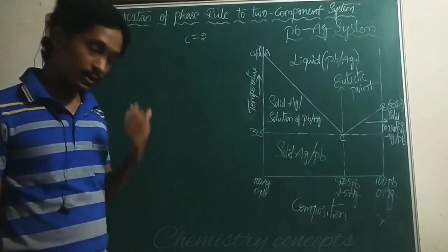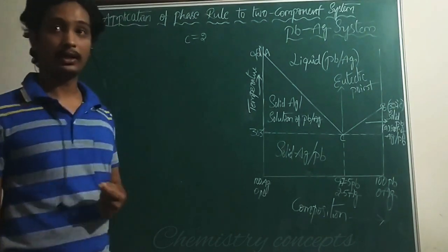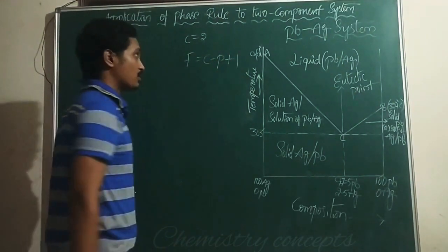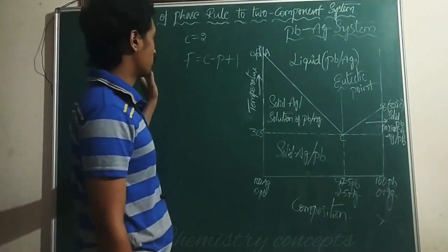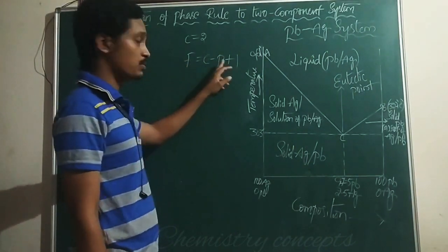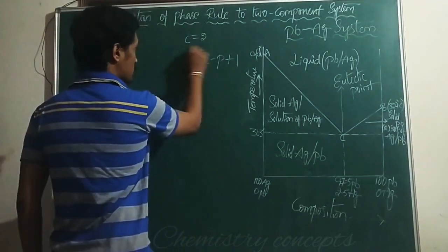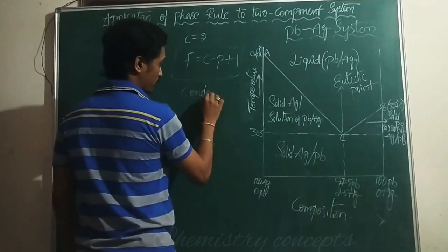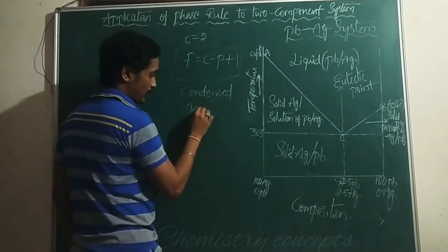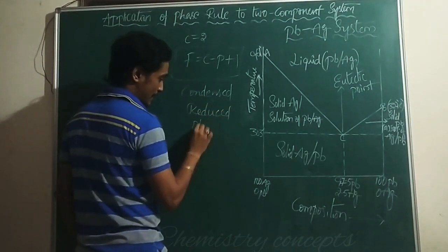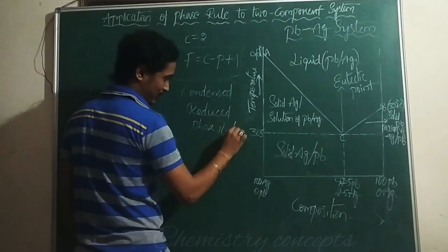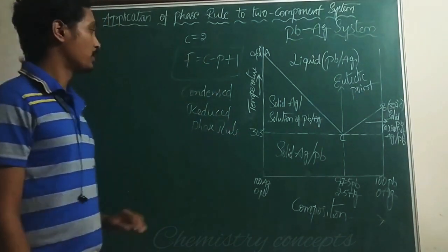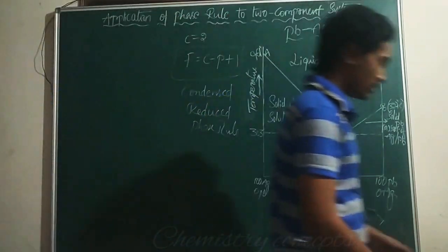Because pressure is kept constant, the phase rule is written as F = C − P + 1. This is the difference between a single-component and a two-component system. For a single-component system, F = C − P + 2, whereas here F = C − P + 1. This is known as the condensed or reduced phase rule.